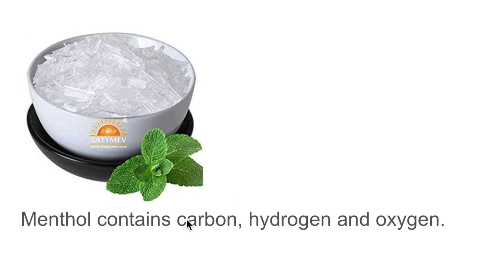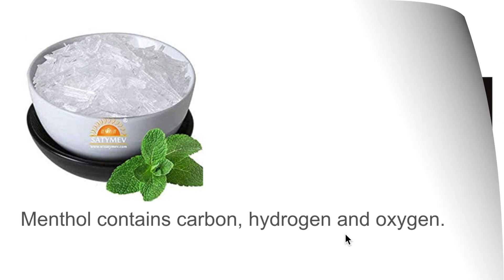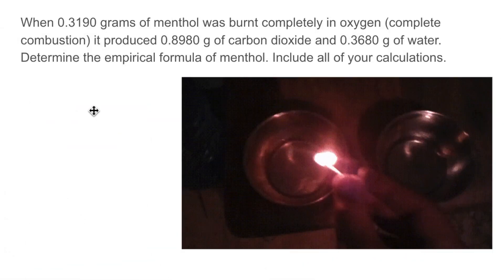Menthol, shown here, contains carbon, hydrogen, and oxygen. When 0.3190 grams of menthol was burnt completely in oxygen — complete combustion — it produced 0.8980 grams of carbon dioxide gas and 0.3680 grams of water vapor. Determine the empirical formula of menthol. Include all of your calculations.